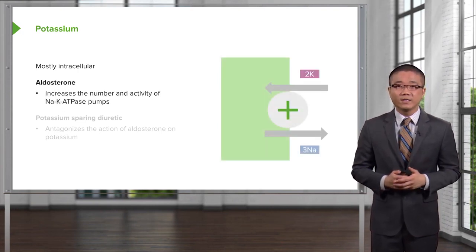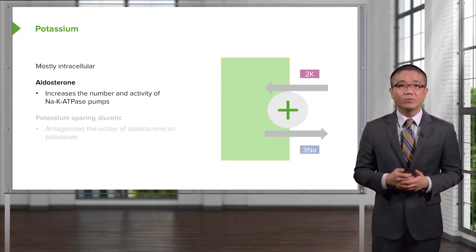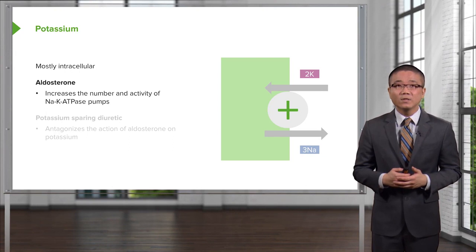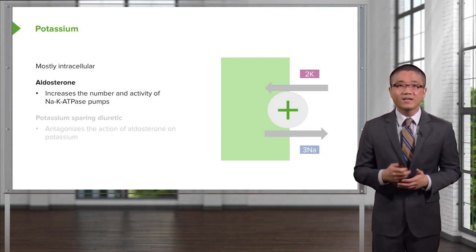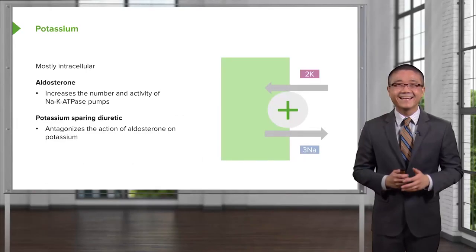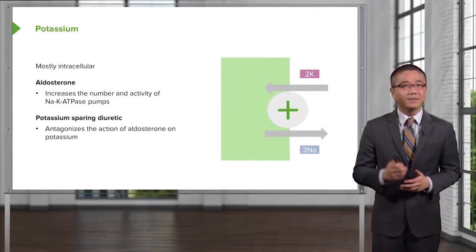Aldosterone has a very important mechanism in the distal collecting system to maintain not only fluid homeostasis, but affect the potassium channels. Aldosterone increases sodium reabsorption at the expense of excreting potassium. This allows it to maintain electrical neutrality because otherwise we would have entropy. Potassium sparing diuretics, however, antagonize the action of aldosterone on potassium.